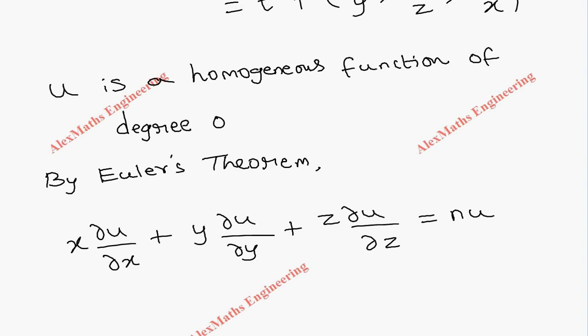But the value of n here is 0. So, it is going to be 0·u, which is nothing but 0.